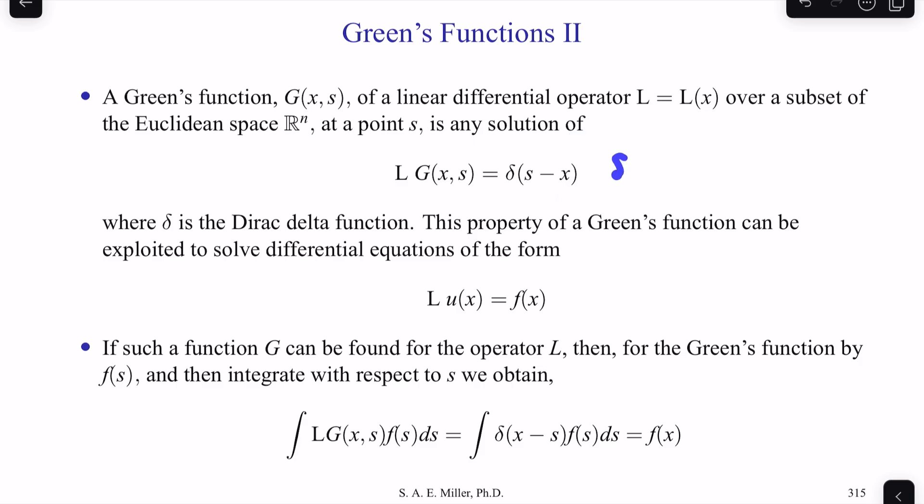So what we do is we first solve this equation. The right-hand side is delta s minus x, which we got rid of f. And the linear operator is the same, and we solve for G. If we can do that, then using that Green's function, we can solve this original differential equation, L of u of x equals f of x.